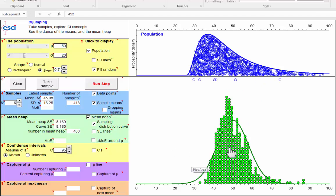Well, there's the mean heap of 400 sample means. And I think it's pretty clear that the normal distribution does a reasonable job of approximating, but the mean heap does have skew, not nearly as strong skew as the population.